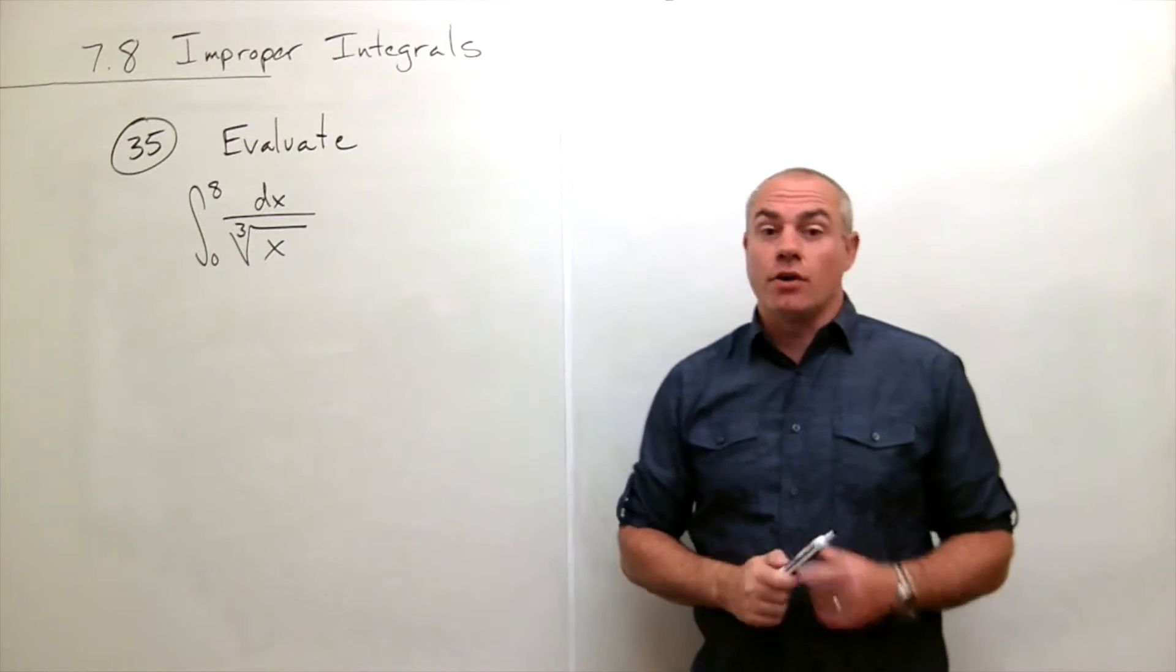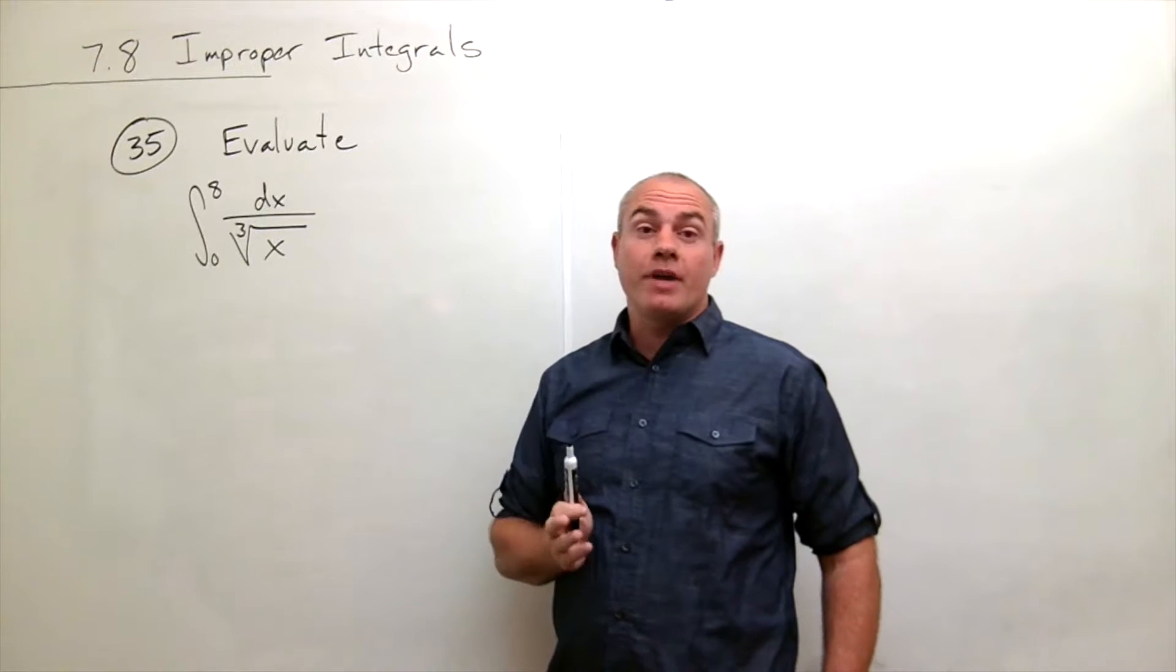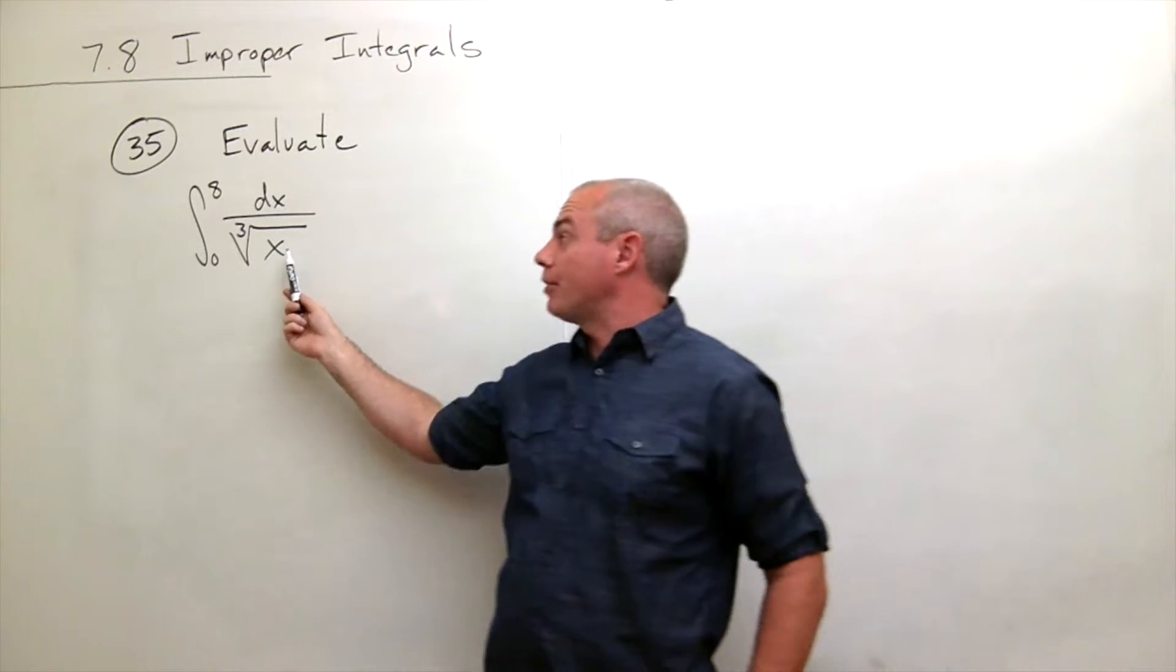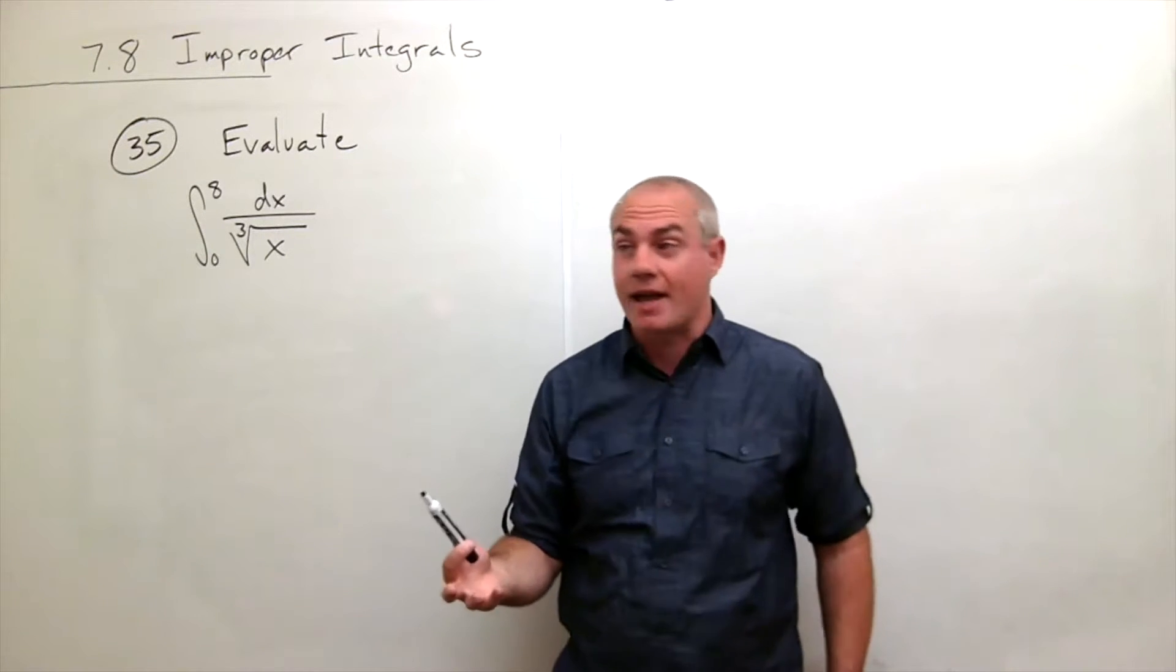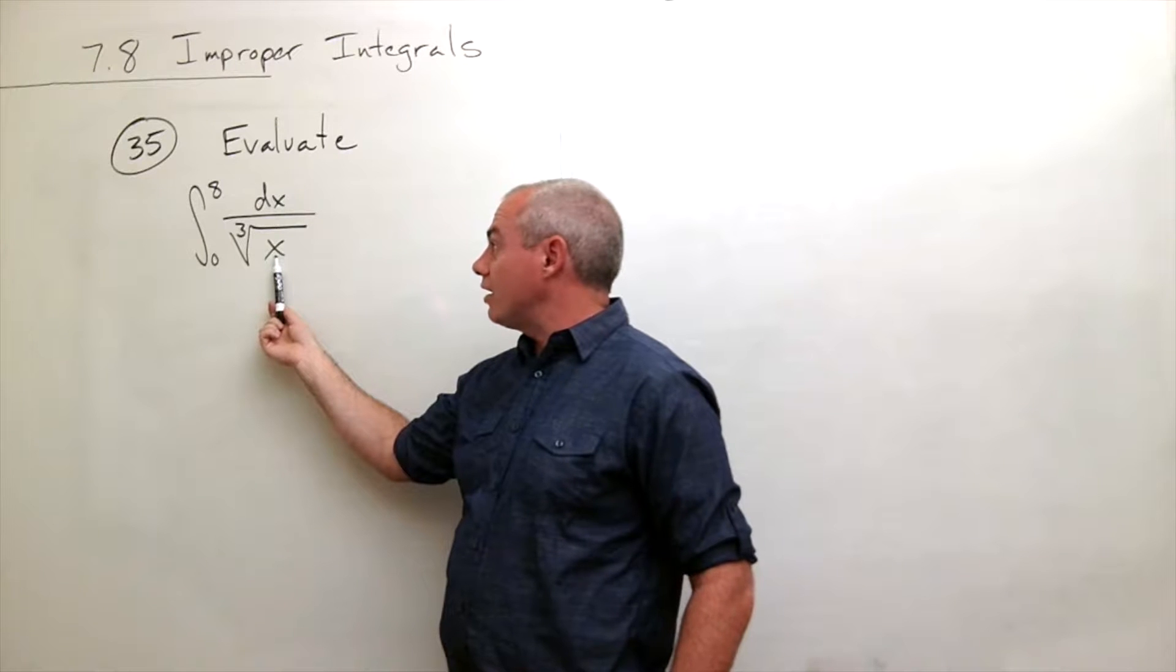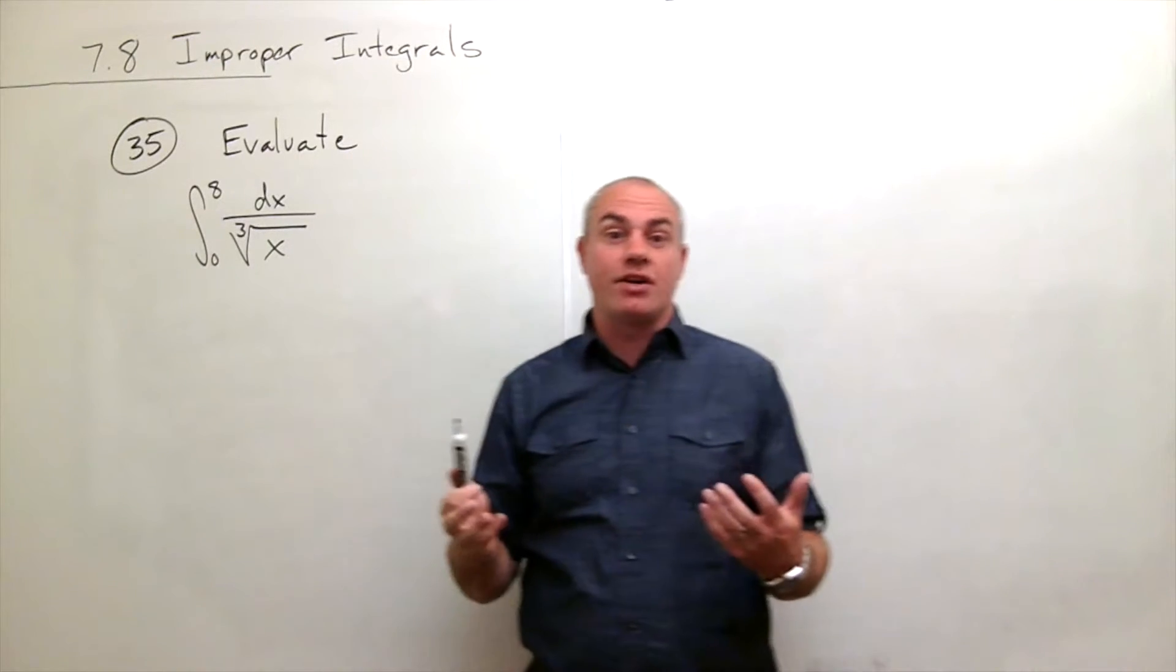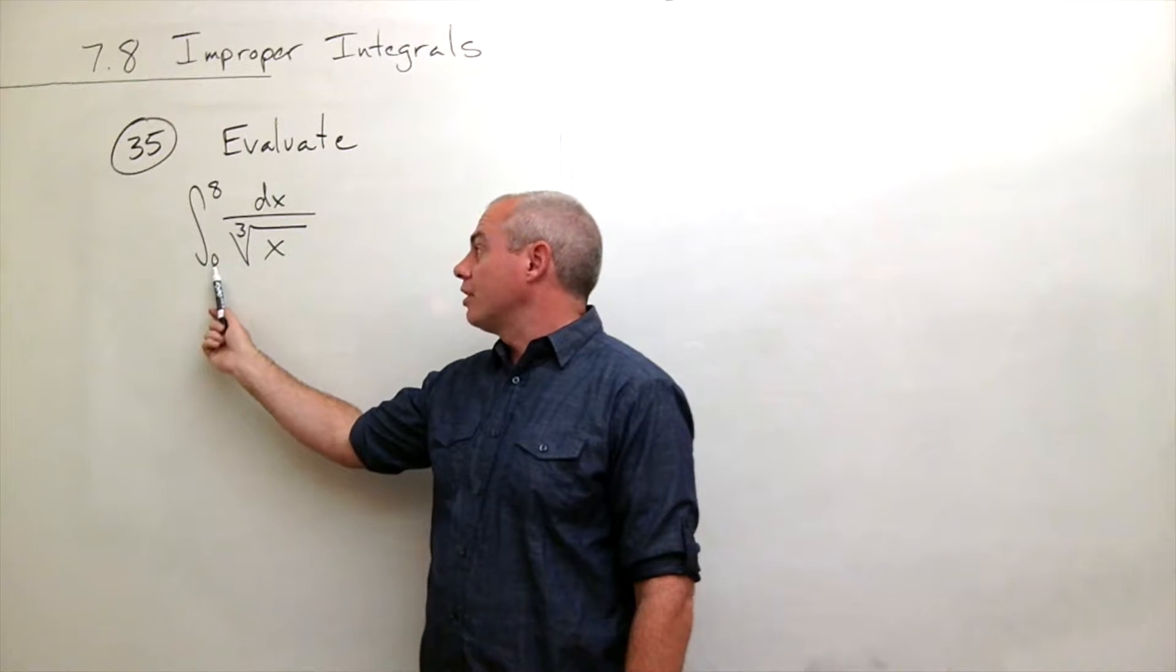All right, so if we want to evaluate this integral, the first thing we have to recognize is that it is in fact an improper integral. It's not as easy to see this type of improper integral as it is when there's just an infinity or a negative infinity hanging out, but what we see is if I did plug in 0 here, this guy would become a 0 on the bottom. There'd be division by 0 and that's no good. So this is improper at 0.